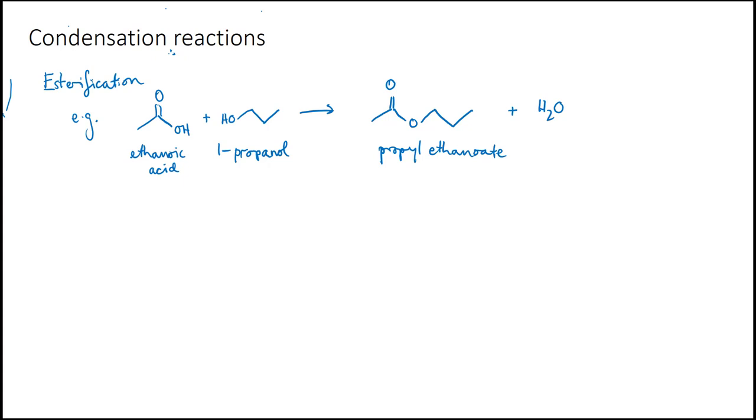The two reactions we're most interested in here are esterification and amidification. In esterification we take a carboxylic acid like ethanoic acid and an alcohol like 1-propanol. Those two functional groups react together to give an ester, in this case propylethanoate. During this process the OH group from the carboxylic acid and the hydrogen from the alcohol form water as a byproduct.